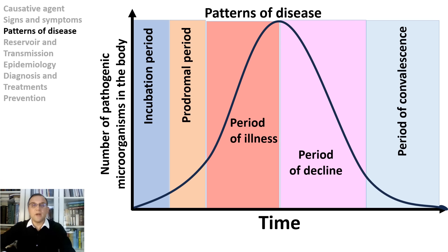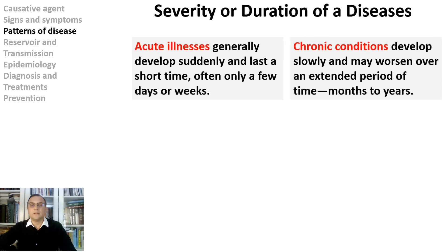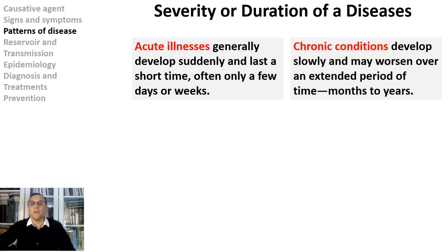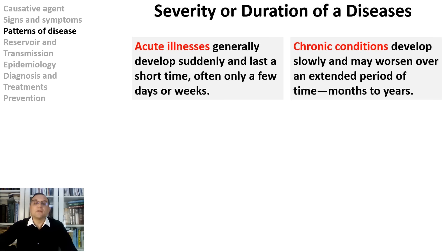Other periods of illness vary greatly depending on the disease. Diseases are differentiated by severity and duration — there are acute diseases, chronic diseases, and subacute diseases. Acute illnesses generally develop suddenly and last a short time, often only a few days or weeks. Examples are flu, pink eye, and urinary tract infections. There are some acute diseases, however, that come on suddenly and produce life-threatening symptoms, including heart attack, asthma attack, pneumonia, appendicitis, organ failure, and acute bronchitis.